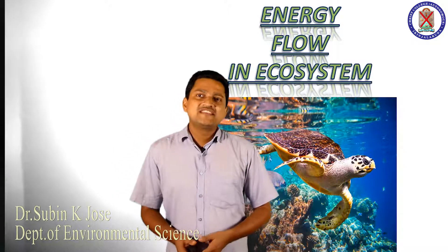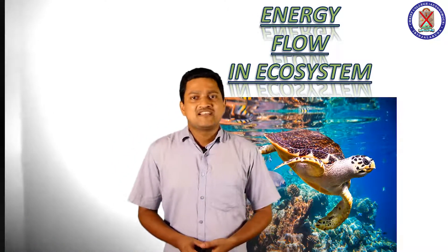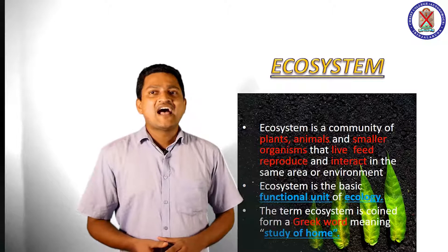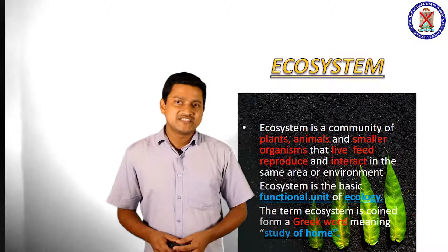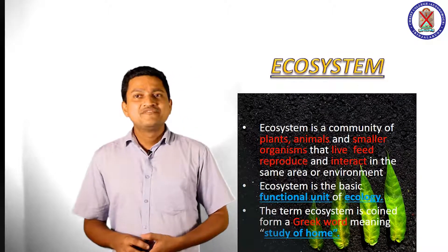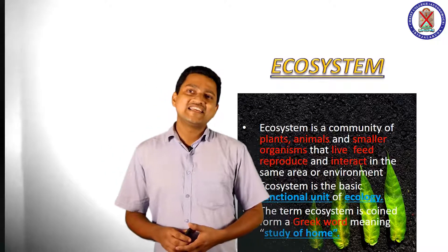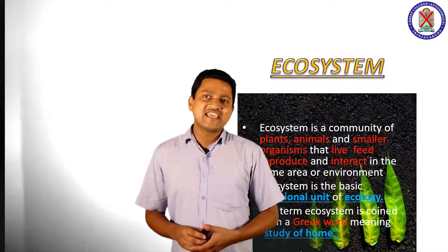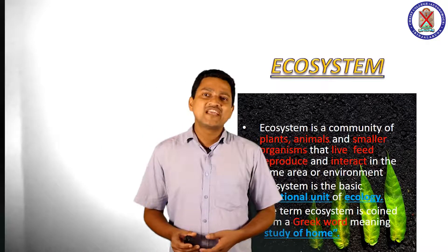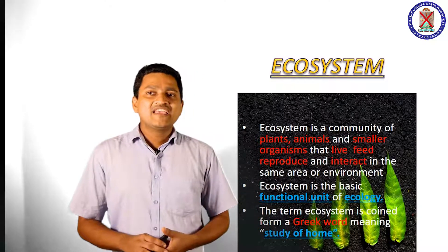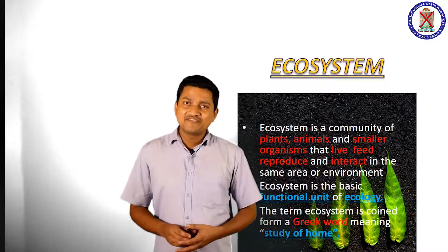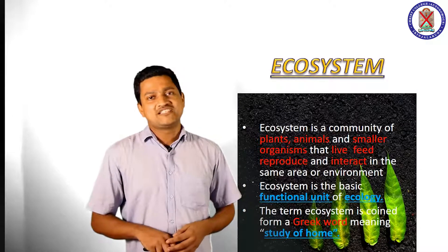An ecosystem is defined as a community of plant, animal and smaller organisms that live, feed, reproduce and interact in the same area or environment. Simply, an ecosystem is the basic functional unit of ecology.